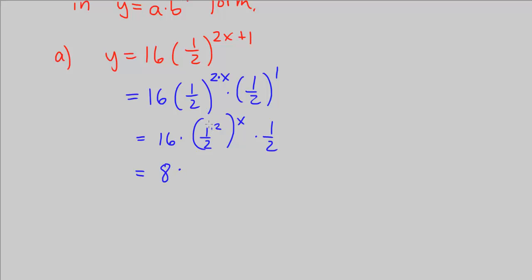Times one-half squared we know is going to be 1 squared over 2 squared. This is equal to 1 over 4. We still have to the power of x outside. Converting into the form y equals a times b to the x gives us y equals 8 times one-fourth to the power of x.